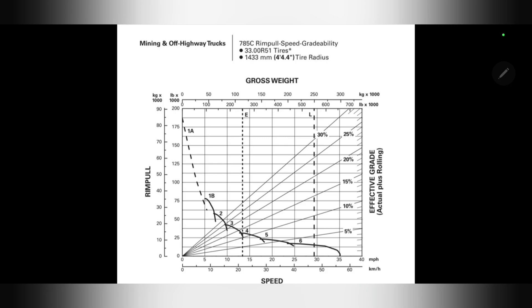Let's do an example together. A loaded 785C truck travels uphill on a road with a gradient of 8%. The site rolling resistance is 2%. This RIMPLE curve here is from Caterpillar's Performance Handbook and is specific to truck 785C's, which is our truck model.